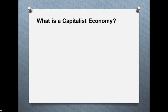What is a capitalist economy? Under this type of economy, all the factors of production — that is, land, labor, capital, and enterprise — are owned by private individuals or private entities. People have full freedom to use their resources the way they want, and there is no government interference.